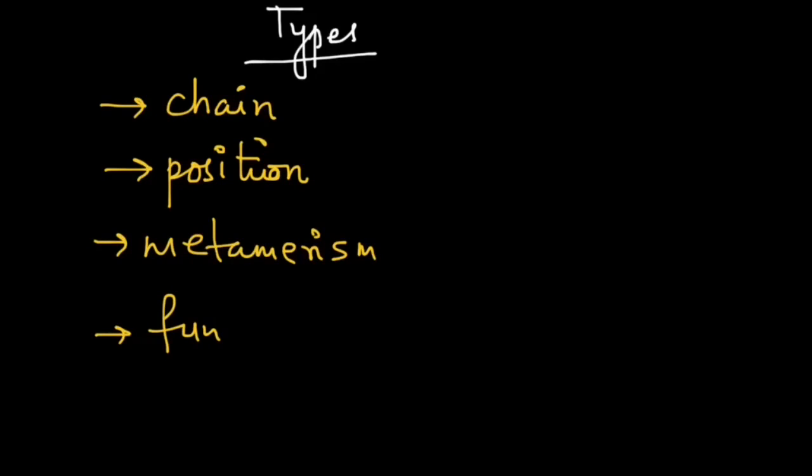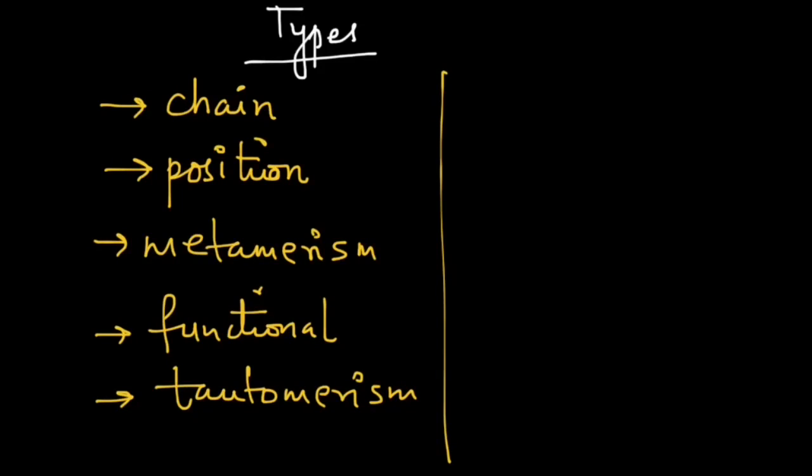We have functional isomers, and the sixth type of structural isomers is ring-chain isomers. It is basically a type of chain isomers but there is a ring involved, so we are giving it a separate category. Structural isomerism has these flavors and in the coming videos we are going to take a look at each one of them.